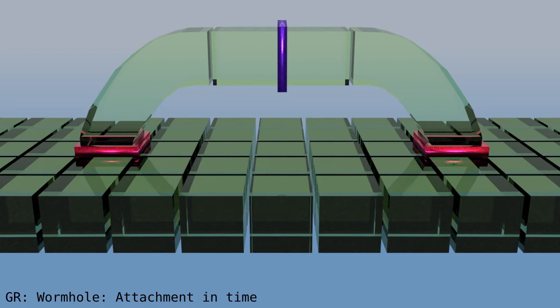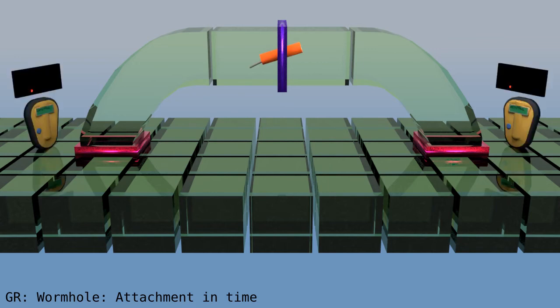A wormhole could be used to go back in time. First, let's look at how mouths are attached to spacetime. Let's put a firecracker at the throat and detectors at the mouths.